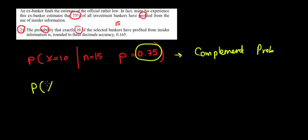of five people who did not profit. We're going to use the complement - the five people that did not profit from insider information out of the sample of 15 observations, with the probability of the remaining 25% that did not profit.